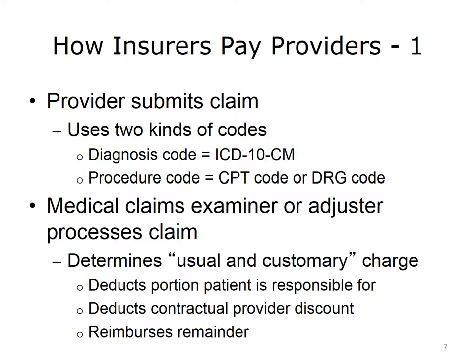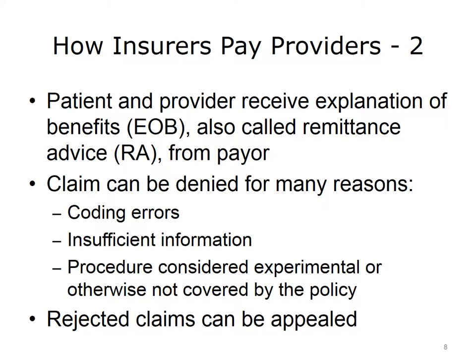The balance is then remitted to the provider in an explanation of benefits or remittance advice. An explanation of benefits, or EOB, also known as a remittance advice, or RA, is a document issued by the payer stating the status of the claim and whether it is paid, suspended or pending, or rejected or denied. The purpose is to provide detailed payment information relative to the claim, and if applicable, to describe why the total original charges have not been paid in full. If a claim is rejected, the reason must be stated in the explanation of benefits or remittance advice. Claims can be denied because of coding errors or insufficient information, because a service is not covered under the policy, or because a procedure is still considered experimental.